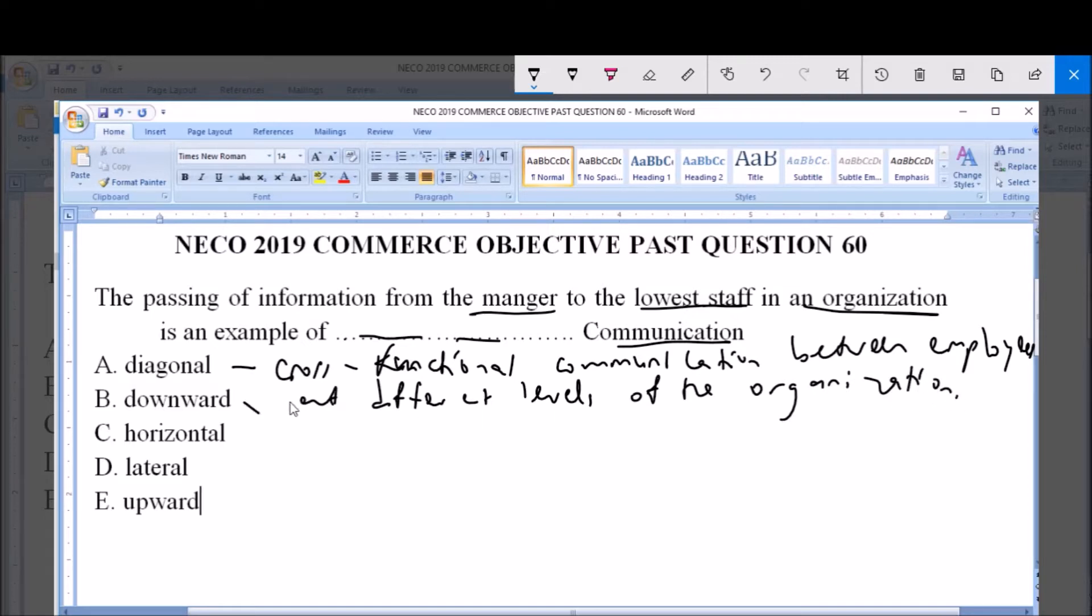Option B, which is downward, refers to when company leaders or managers share information with lower-level employees.